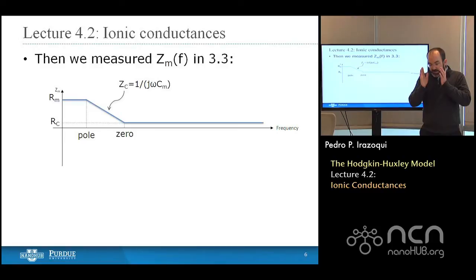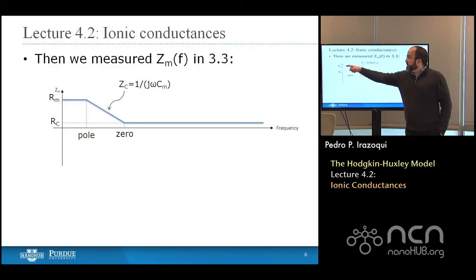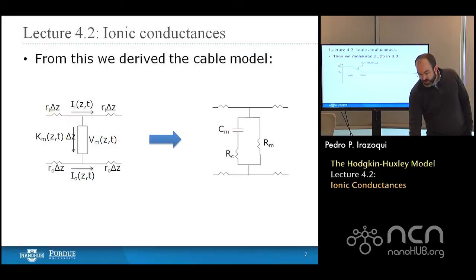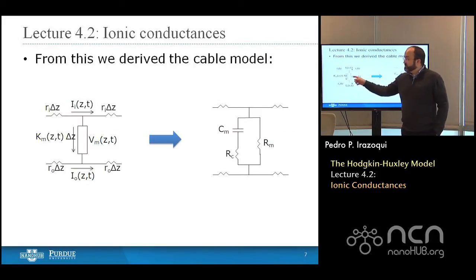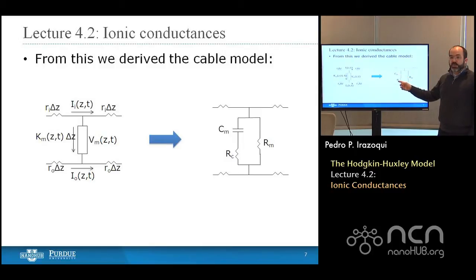The membrane consists of an insulating phospholipid bilayer with a concentration of positively charged potassium ions on one side and negatively charged anions on the other, so it looks like a capacitor. C sub m represents the transition region, and at very high frequency the impedance of the capacitor goes to zero, at which point the impedance is dominated by R sub c. So we could draw an equivalent circuit where the black box in the core conductor model is replaced with R sub m in parallel with C sub m, in series with R sub c — the resistance of the intracellular cytoplasm.